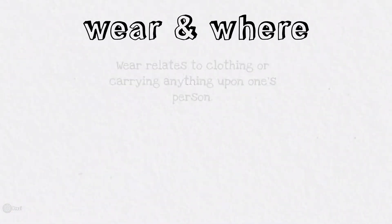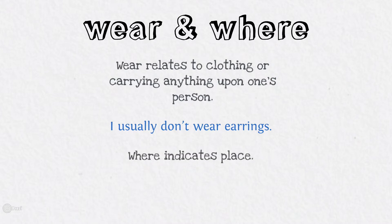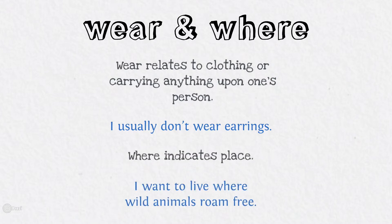Wear and where. Wear relates to clothing or carrying anything upon one's person: 'I usually don't wear earrings.' Where indicates place: 'I want to live where the wild animals roam free.'